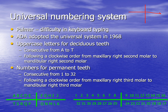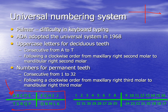In the Universal numbering system, consecutive letters and numbers are used so that each tooth has a specific letter or number that cannot be replaced by another. For the deciduous teeth, we start with the letter A for the second molar of the upper maxillary right side, then go clockwise to end with T for the second molar on the mandibular right side. For the permanent dentition, we start with number 1 for the third molar of the upper right jaw and go clockwise to end with number 32 for the third molar of the mandibular right quadrant.